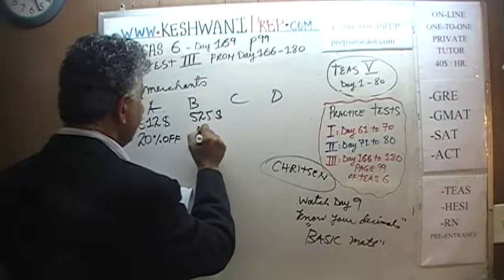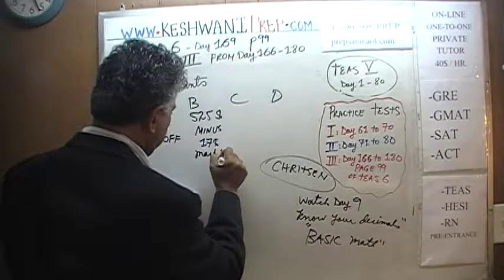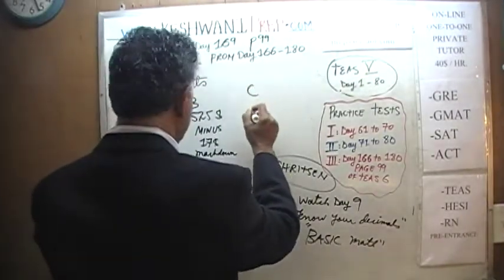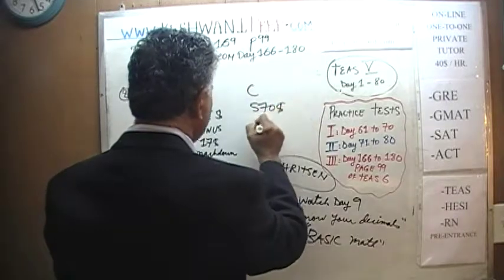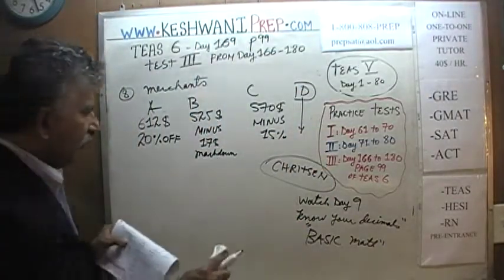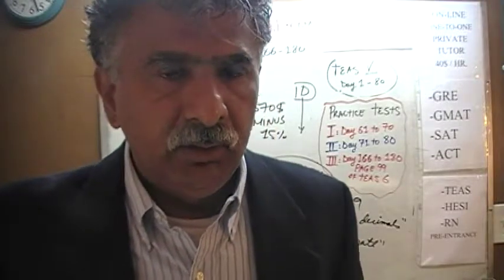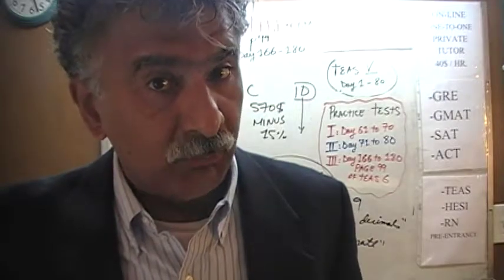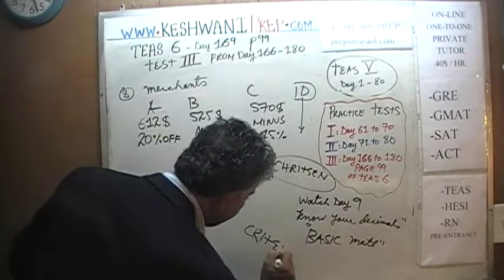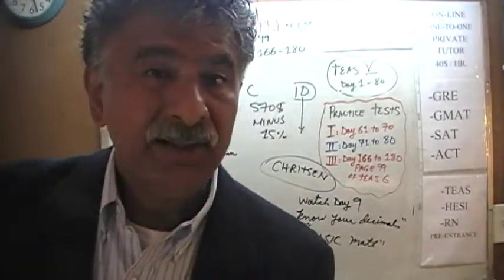Merchant C is $570 minus 15%. Merchant D we will come to at the end. The question is: where should I buy my computer from? The only criterion — not 'criteria', since criterion is the singular form, which we cover on vocabulary day 66 — the only criterion being used here is price. Whichever merchant has the lowest price is where we buy from.